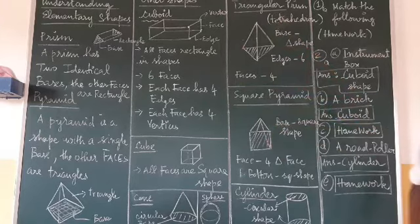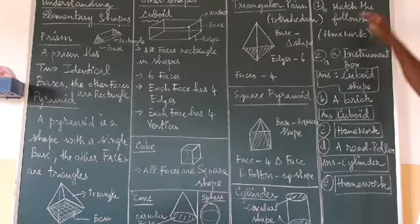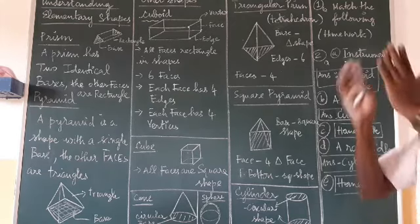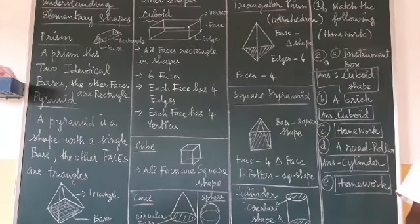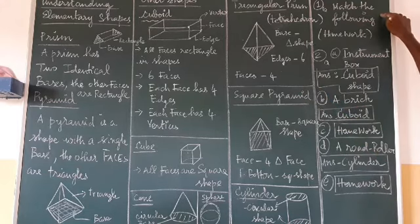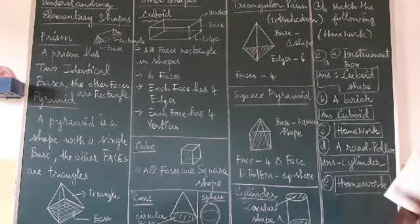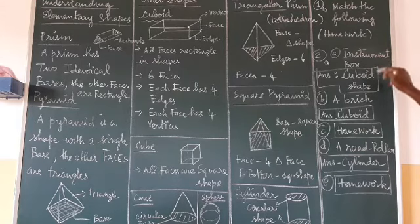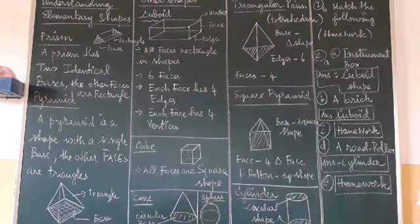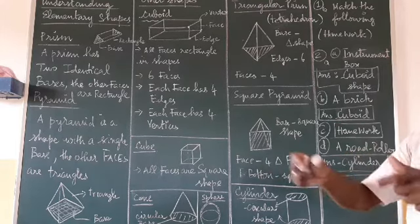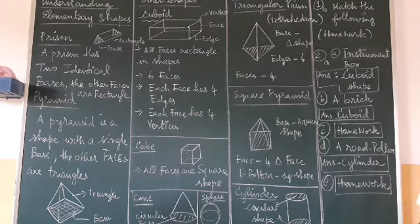Now moving to exercise 5.9 — a matching activity where figures are given and you match them to their shape names. Take that as homework. The second question gives object names: instrument box, bricks, matchbox, road roller, and ladoo. Identify the shape of each. The instrument box, your geometry box, is cuboidal in shape.